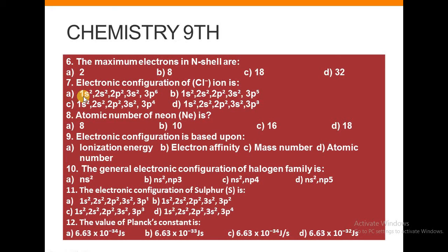Next, number 7: Electronic configuration of chlorine is: a) 1s² 2s² 2p⁶ 3s² 3p⁶, b) 1s² 2s² 2p⁶ 3s² 3p⁵, c) 1s² 2s² 2p⁶ 3s² 3p⁴, or d) 1s² 2s² 2p⁶ 3s² 3p³. Next: Atomic number of neon (Ne) is: a) 8, b) 10, c) 16, or d) 18.